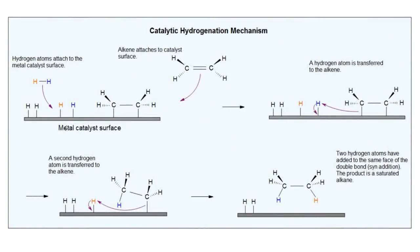Now let's see the mechanism of this reaction. The metal catalyst surface is flat, and hydrogen gas gets absorbed on the surface — it gets attached to the metal catalyst surface. The alkene also attaches to the catalyst surface. Alkene is sp2 hybridized and stereochemically it is also flat. So when two flat surfaces approach each other, hydrogen can only get attached to the alkene from the same side or on the same face.